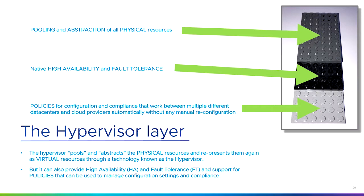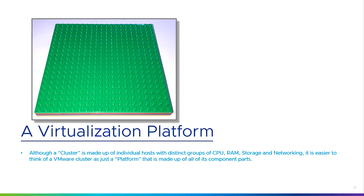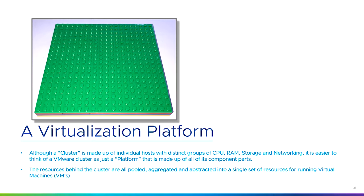If we want to build a platform, we can take those green, red, blue, and yellow building blocks — compute (CPU and RAM), storage, and networking — and we've got a virtualization platform. It makes it simpler to think of it as a single platform that comprises all the hardware components underneath in a way that's been pooled and abstracted. Instead of showing each server and all the different things inside it, I'm just going to show it as a sandwich or a big flat platform for running virtual machines on.